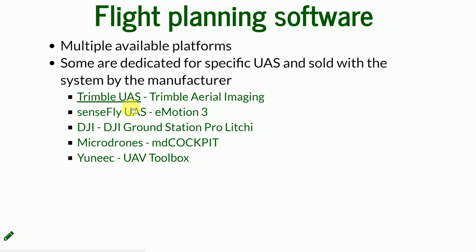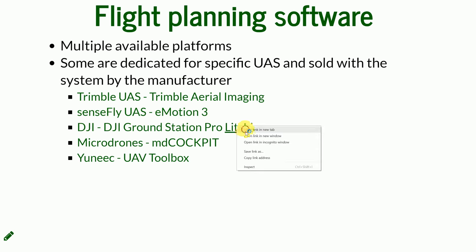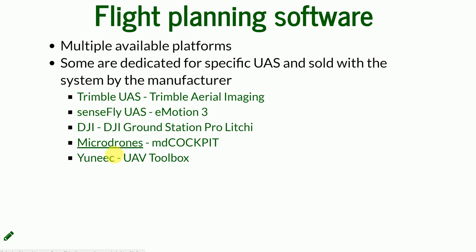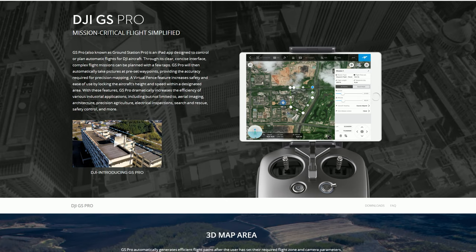If you buy something made by Sensefly — like the eBee — you will use eMotion for flight planning and monitoring. If you have a DJI product such as the Phantom, Mavic, or Spark, there are multiple apps available because DJI is the main manufacturer of consumer-grade small UAS. There is a market for apps as well. Two of the most popular are DJI Ground Station Pro and Litchi. There are also different manufacturers like Microdrones and Yuneec, each with their own developed flight software.